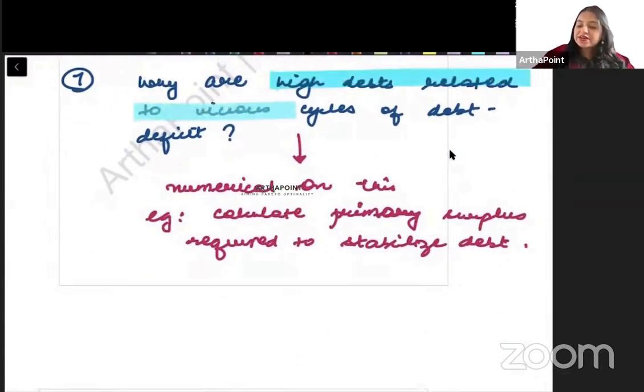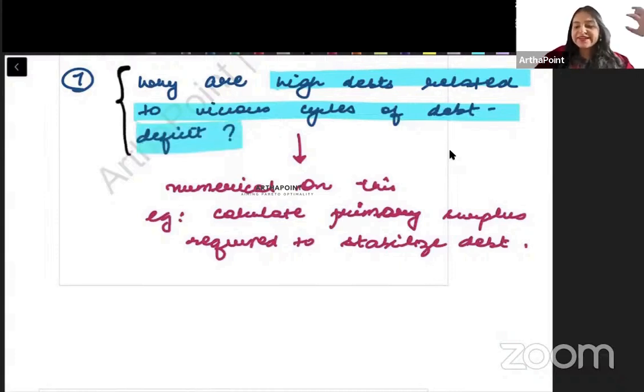Next question beta. Why is high debt related to vicious cycle of debt to deficit? Toh yahaan par aap bataoge ki jab hum high debt lete hai. Toh kiise woh future mein deficit cause karta hai. Or phir deficit ko solve karne ke lihe phir se debt lete hai and it causes a vicious cycle. So you need to explain this.